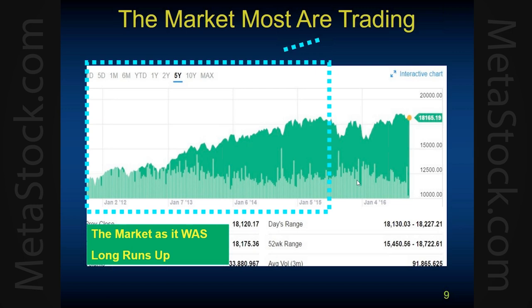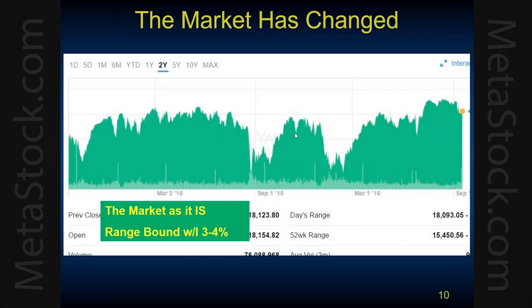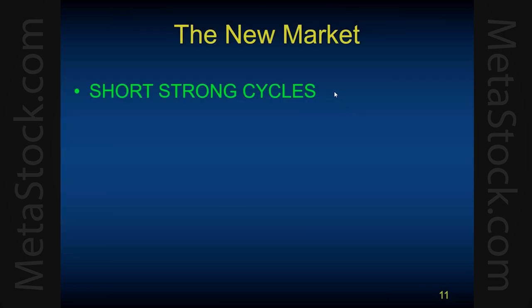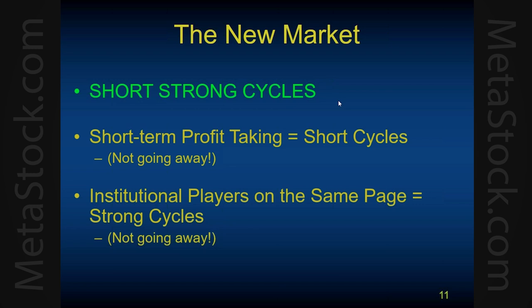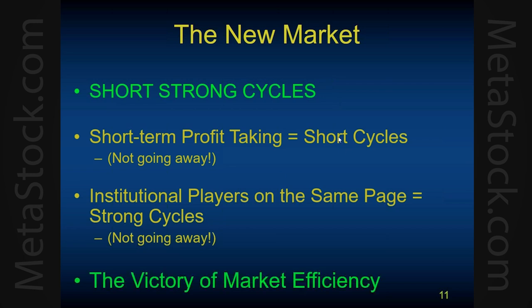The problem with goals, as I see it, is that the market has changed, and a lot of people don't trade the market as it is. This is a five-year view of the Dow. I've highlighted it here on the left side in the blue box — this is the market as it was, just going up, up, up with long runs. But that is not the market we are in today. For two years — the right side of that chart — the market is basically flat and range-bound. We've had a couple of corrections, and we've bounced back, but it's a go-nowhere market, range-bound within maybe 3–4% on a day-to-day, week-by-week basis.